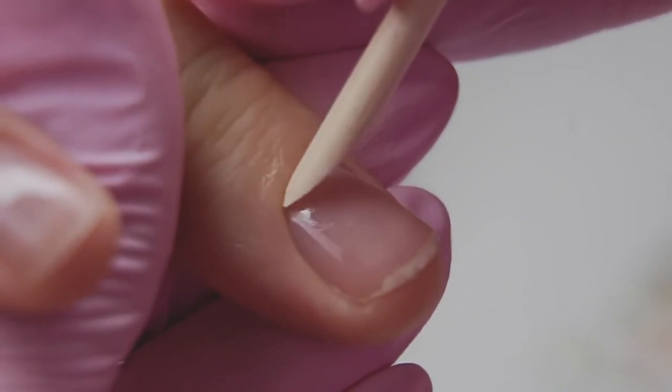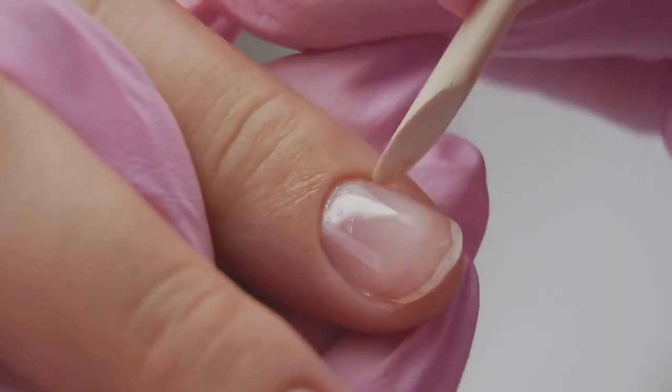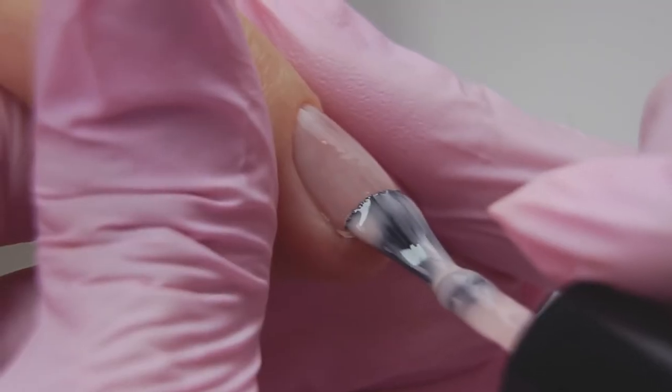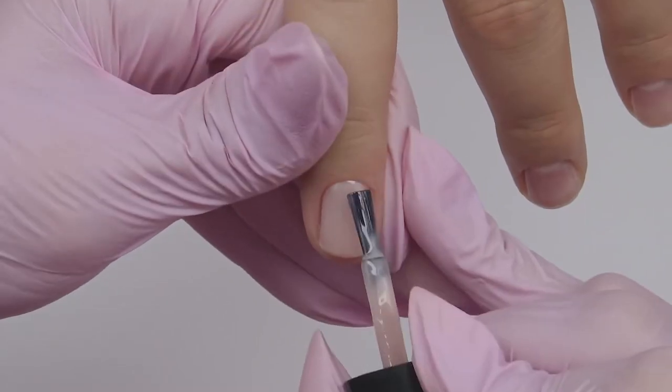First, I push the cuticle with an orange stick to apply the color as close as possible. There will be a slider on the ring finger, so I apply a camouflage gel polish under it. Cure in a lamp.